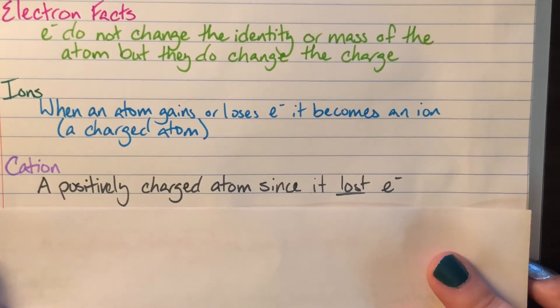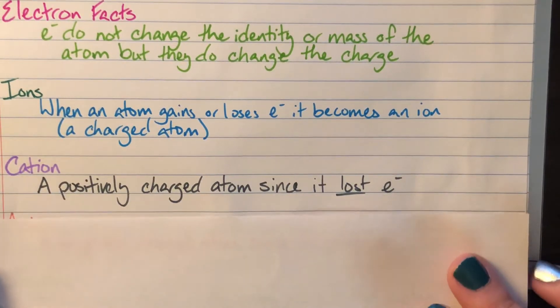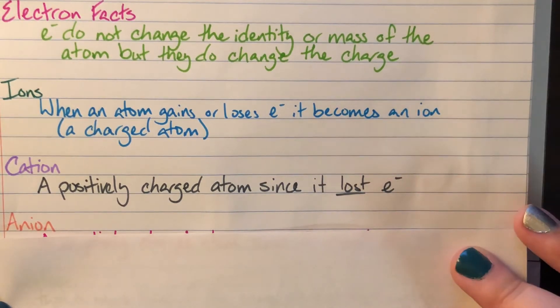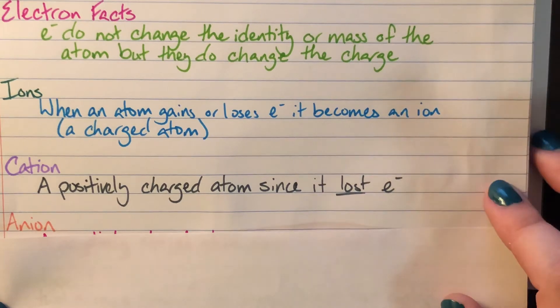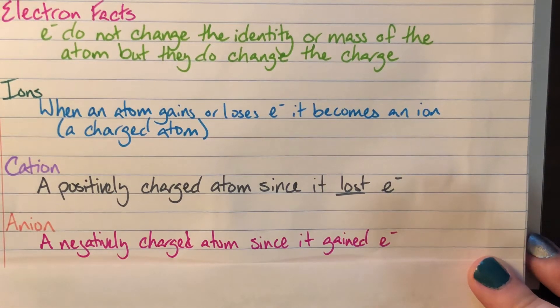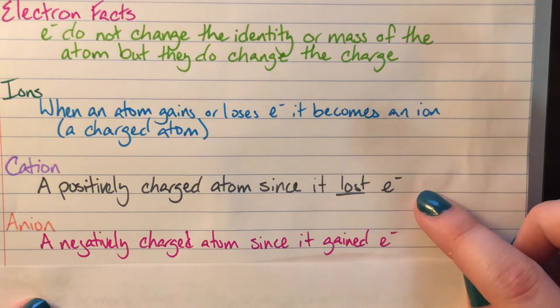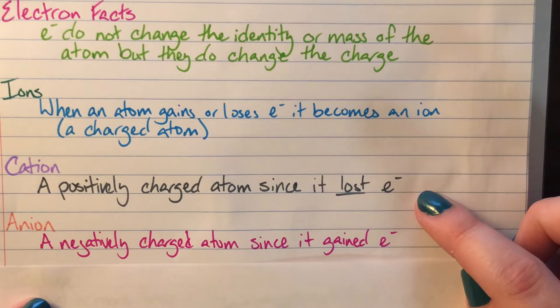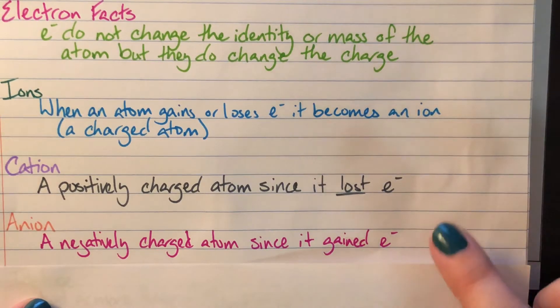The next type of ion that we have is going to be our anion. Our anion is going to be the opposite of our cation. Our cation is positively charged, so our anion is going to be negatively charged. Cations are positively charged because I have more positives from protons than I have negatives from electrons. And anions are going to be negatively charged because I have more negative charges from my electrons than I do from my positive protons.